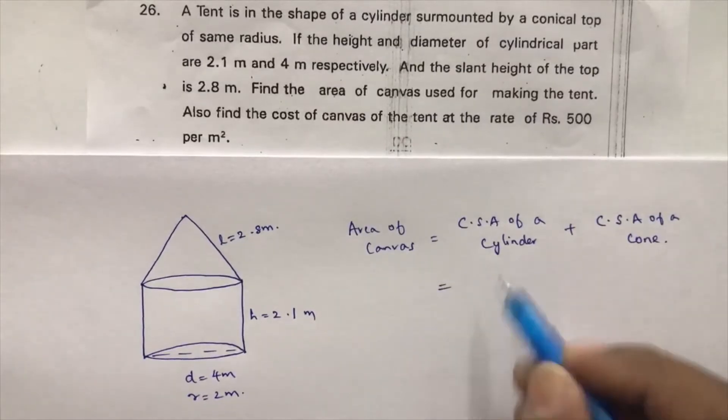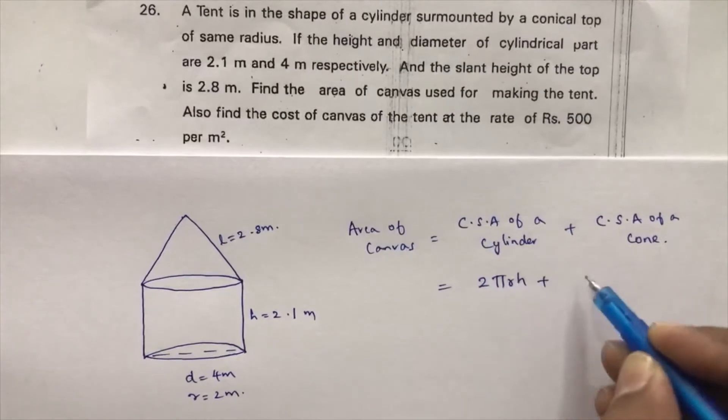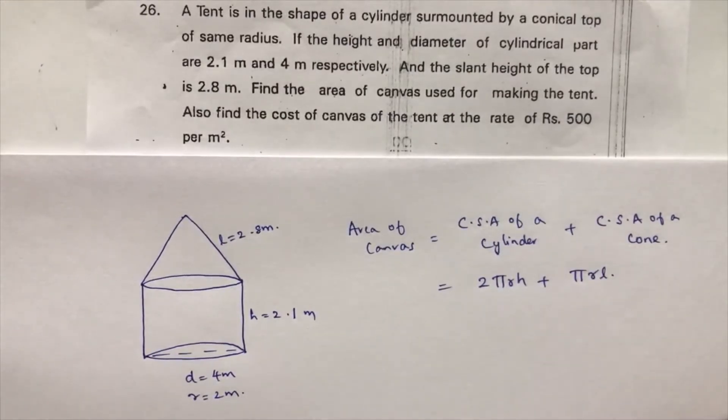Now curved surface area of a cylinder is 2πRH and curved surface area of a cone is πRL. See all the values we have in the diagram. So radius is same so I will take πR common, here I will be left with 2H plus L value.